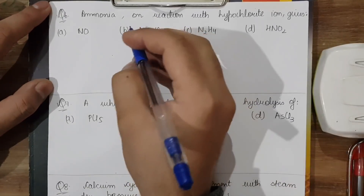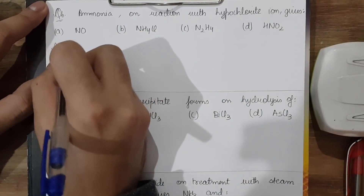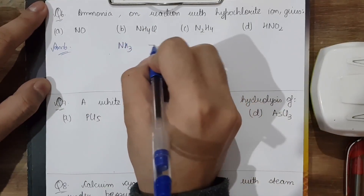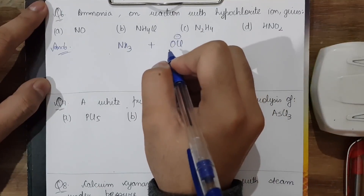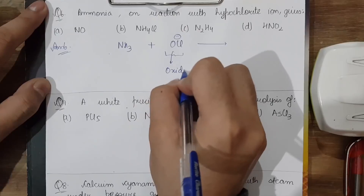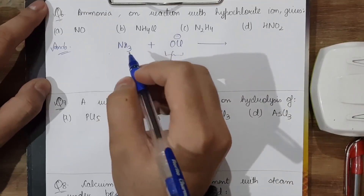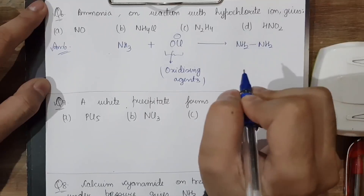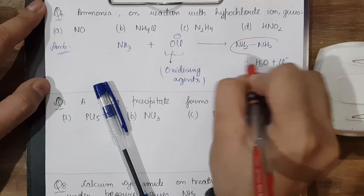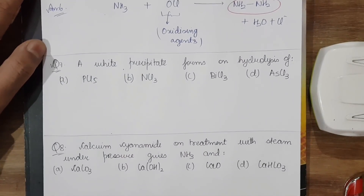Question 6: ammonia on reaction with hypochlorite ion gives which compound? We have NH₃ reacting with OCl⁻. OCl⁻ is a good oxidizing agent, so NH₃ is oxidized to give NH₂NH₂, along with H₂O and Cl⁻. The product formed is N₂H₄, also known as hydrazine.